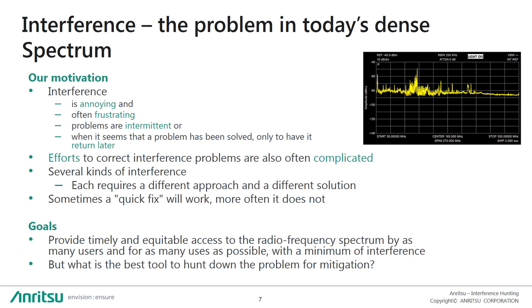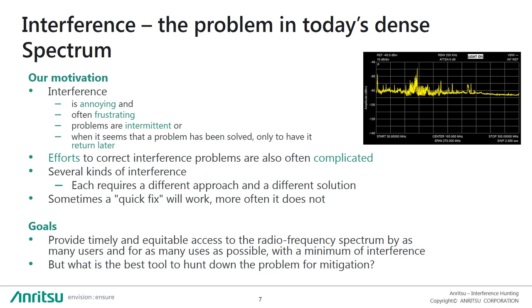What is our motivation for finding sources of interference and, if possible, eliminating it? Anyone who has suffered from RF interference would tell you that it is annoying, often frustrating, that problems are quite commonly intermittent, and when it seems the problem has been solved, it only returns later. Correcting interference problems can often be quite complicated, especially because there are several kinds of interference, each requiring a different approach and solution. A quick fix very often won't work in the long run.